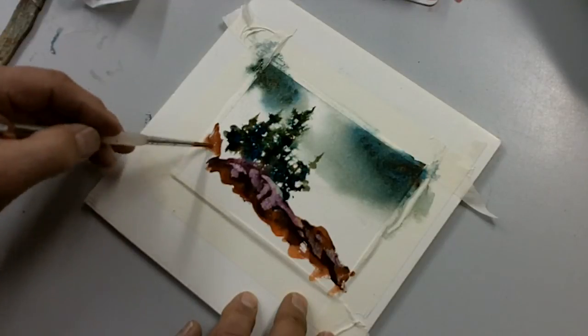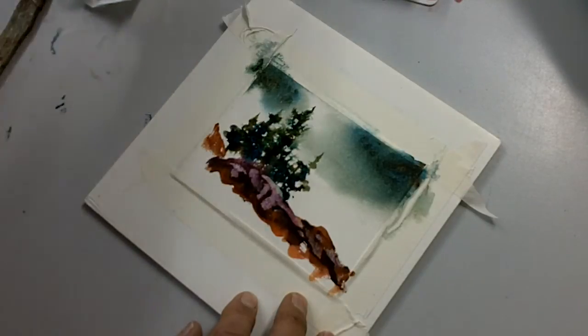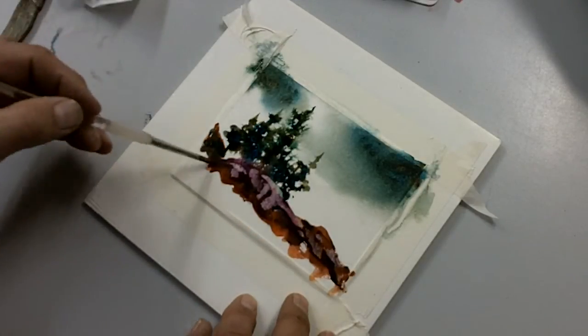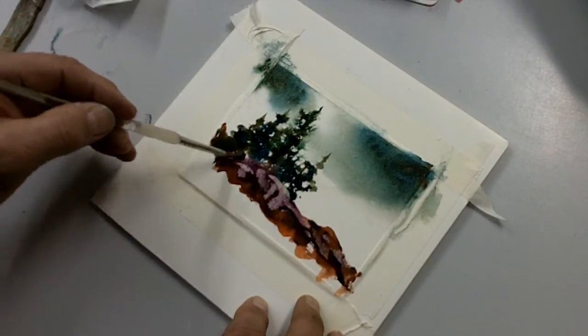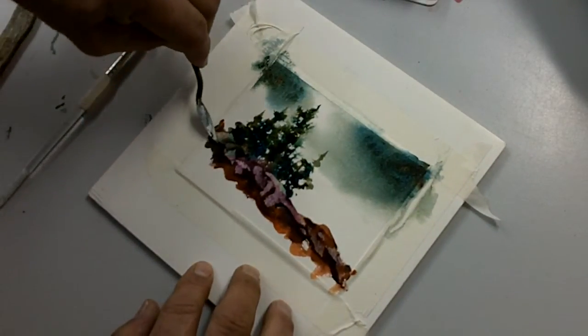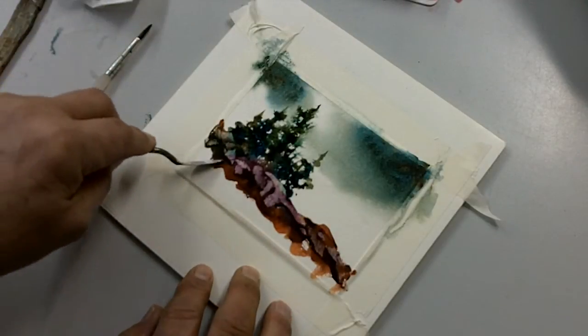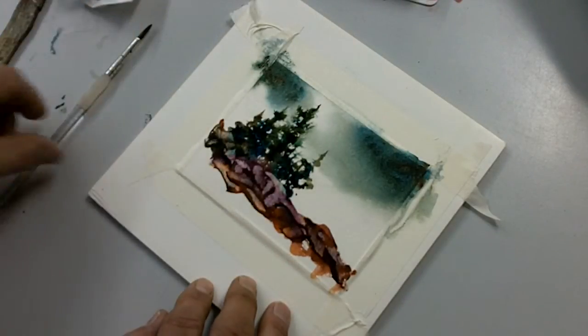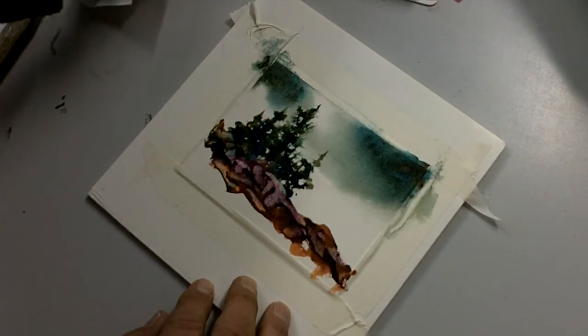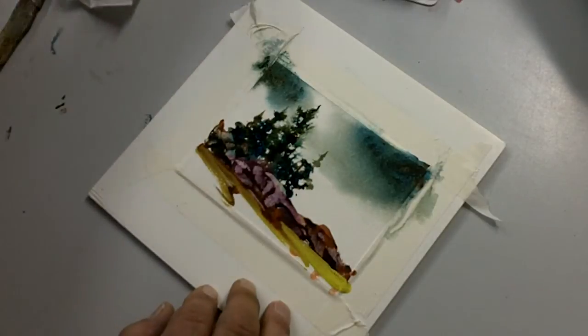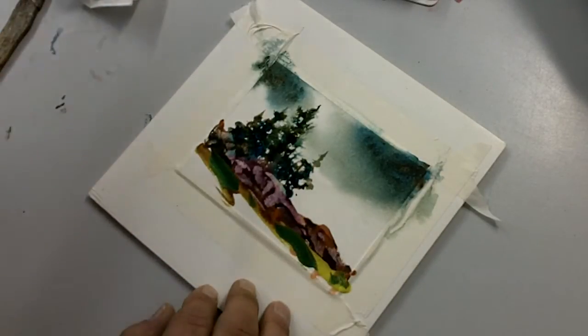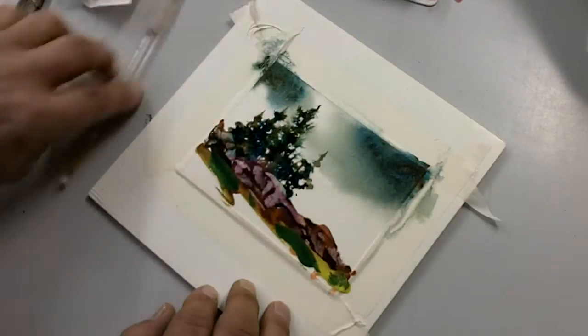And then we'll have another rock coming down here. Let's throw in a little dark. Fill in behind there. Another rock shape. And we need a little grass or something in the foreground, so I'll use some color, a little blue. Green, mix it up.